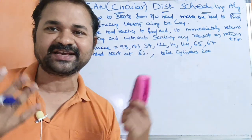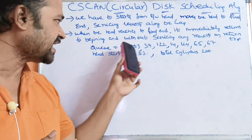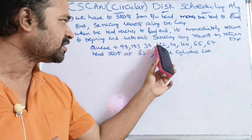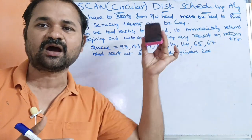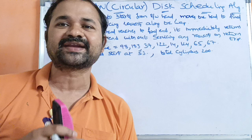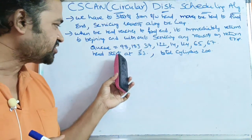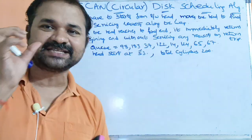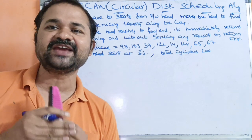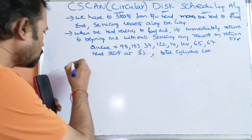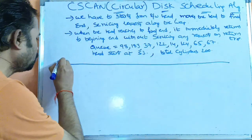Let us solve a problem with an example. The queue contains the requests: 98, 183, 37, 122, 14, 124, 65, 67 — we can call them cylinders or tracks. The initially read-write head starts at cylinder 53. The total number of cylinders is 200, ranging from 0 to 199.